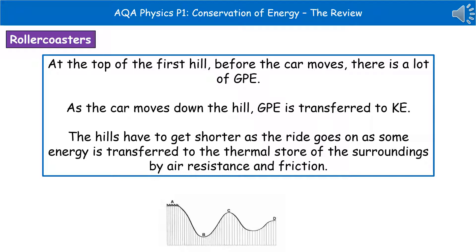As we go back up towards C, that kinetic energy decreases and gravitational potential energy increases. The hills get shorter the further along we go — A is the highest, then C in the middle, and D is the lowest. The reason for that is that as the roller coaster is moving, not all of that energy is transferred from gravitational potential to kinetic. Some energy is transferred to the thermal store of the surroundings as a result of air resistance and friction, so the roller coaster hills have to get shorter.